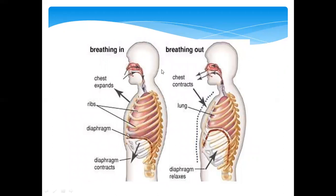This diagram shows that when we breathe in — that is inhalation — the chest expands, ribs pull upward, and the diaphragm contracts. When we exhale, the diaphragm relaxes and the ribs return to their original position.